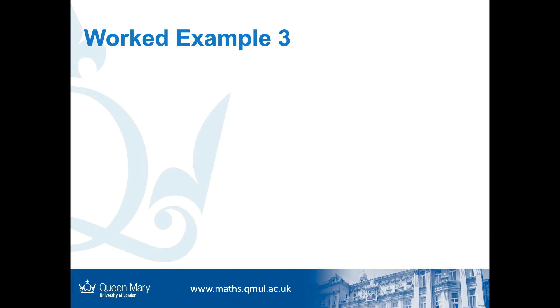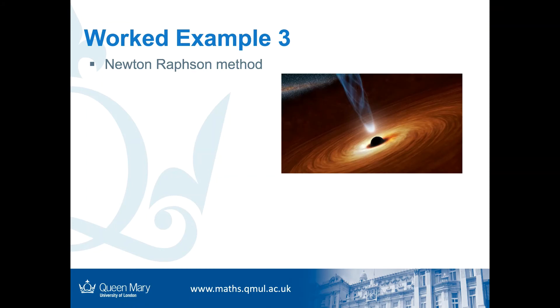Let's see the last example, Newton-Raphson method. So, in my own research, we use this method to calculate the horizon of a black hole. So, in this method, we first need a function f(x) = 0. And then, we use this formula: x_{n+1} = x_n - f(x_n)/f'(x_n).